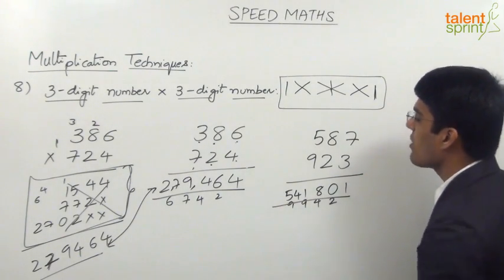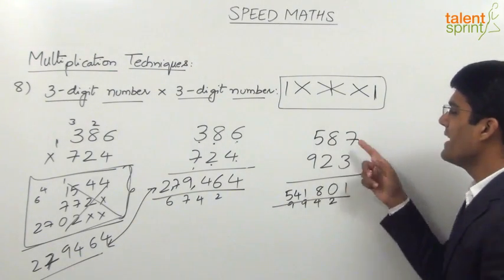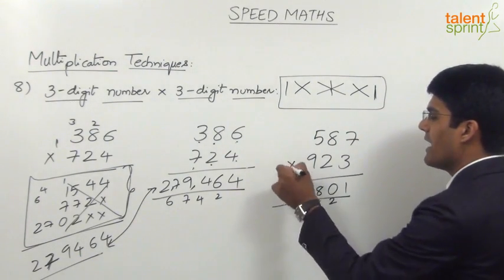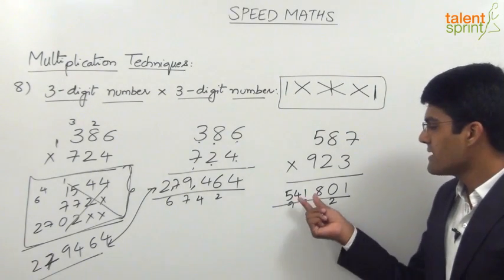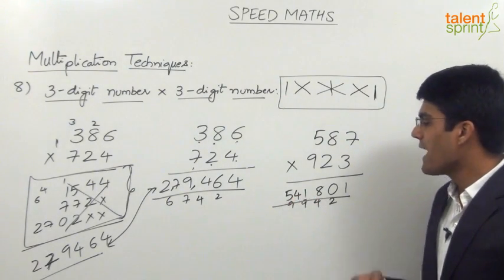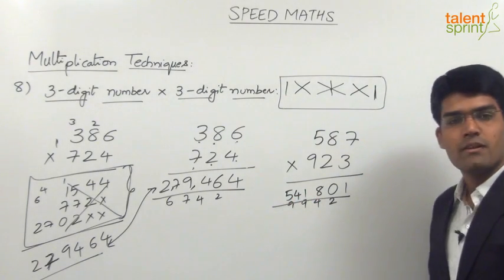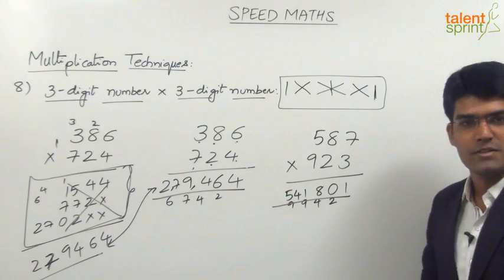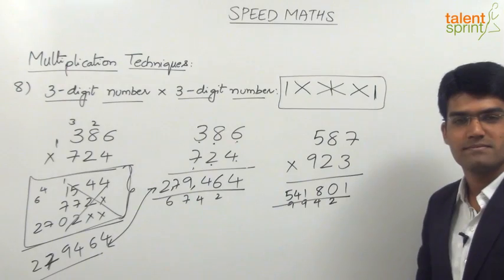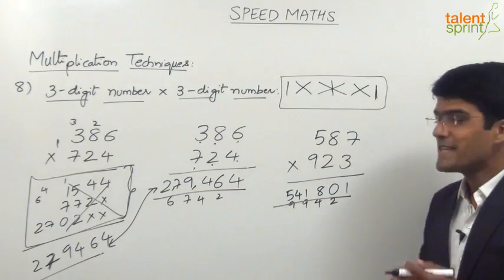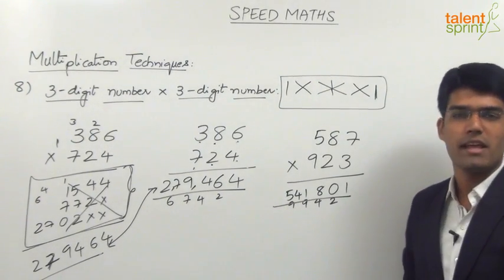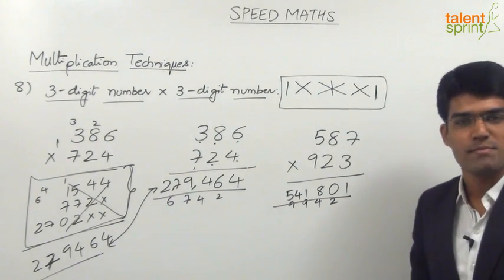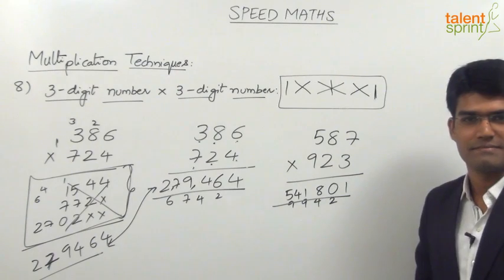So the multiplication of 587 and 923 gives the answer 5,41,801. Simply remember this pattern and apply it for three-digit multiplications.